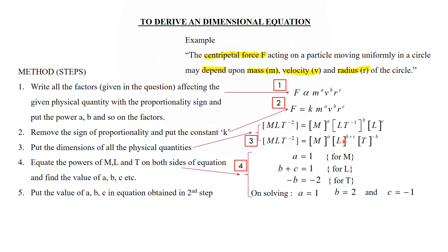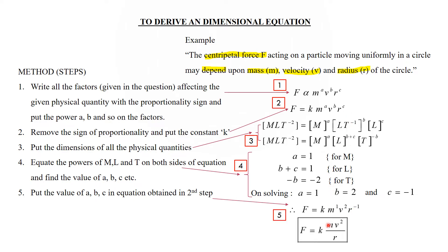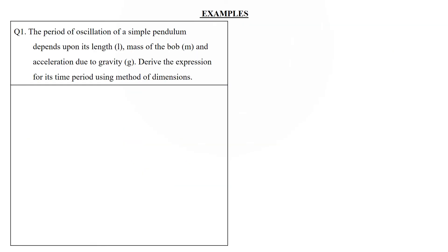Step five: substitute a = 1, b = 2, c = −1 back into the equation from step two. Therefore F = k · m¹ · v² · r⁻¹, which can be written as F = k·mv²/r. This is the well-known formula for centripetal force.